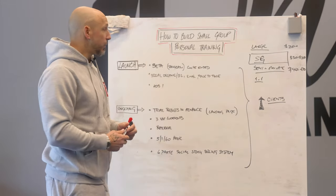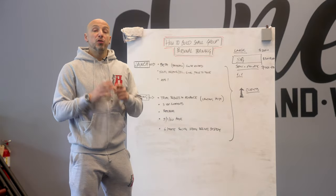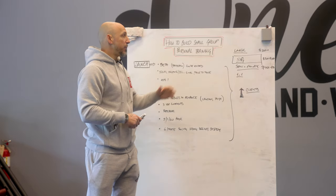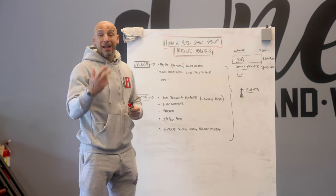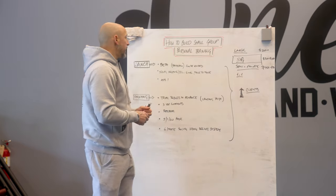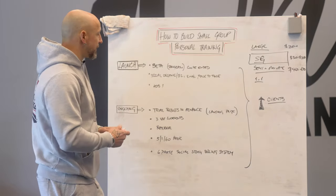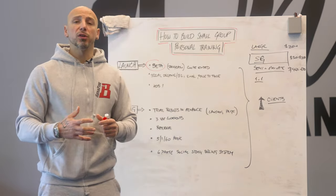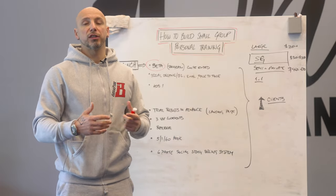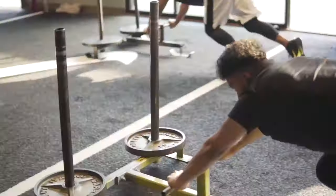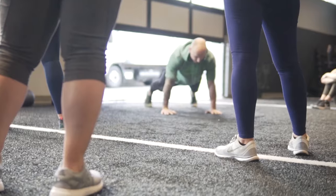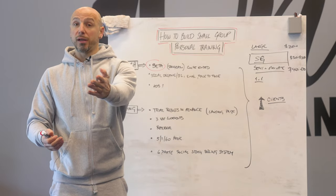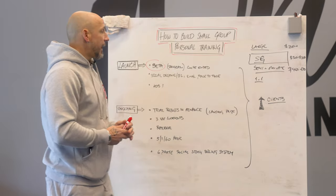A lot of times we get the question on building this out. Let's start with: you don't have a small group yet — maybe you're doing large group, one-on-one, or a combination but just don't have small group. How do you launch it? The best way we've found is to do some type of beta program — telling people you're taking the proven systems of strength training and transformation training and putting them into a more customizable model for less money but the same results, with groups of 8, 12, or 15.